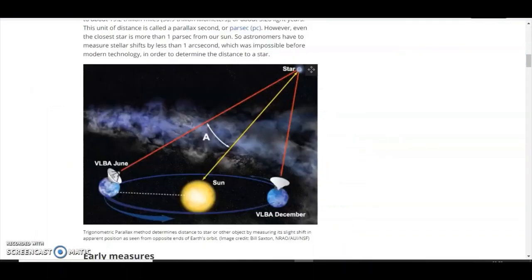And in this example from space.com, it gives you a diagram of how they calculate parallax, stellar parallax. They'll observe a star, for example, in June and take a reading, and then wait six months for the Earth to orbit around the Sun to a different position in the solar system, and then take another reading in December, then calculate the angles, and they say they can prove that the star is light years away.